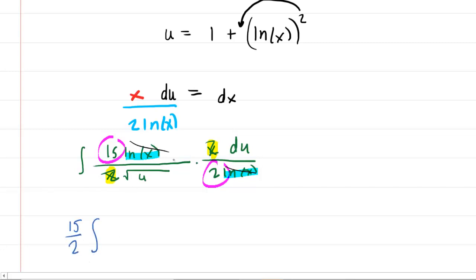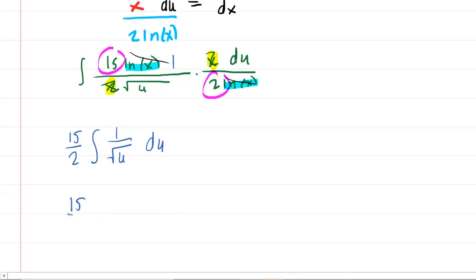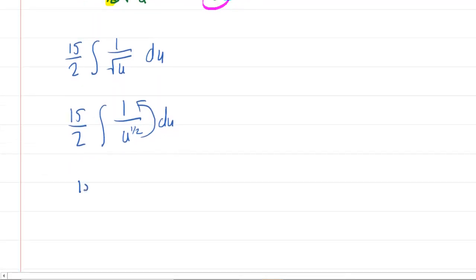What's left, and be careful here, it's not the square root of u, it's 1 over the square root of u. Make sure you keep that square root of u in the denominator for the time being. This is a relatively easy integral because we can rewrite the square root of u as u to the power of 1 half. Furthermore, we can move u to the 1 half to the numerator, giving us u to the negative 1 half.